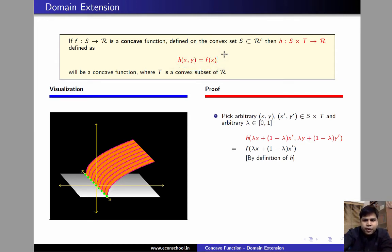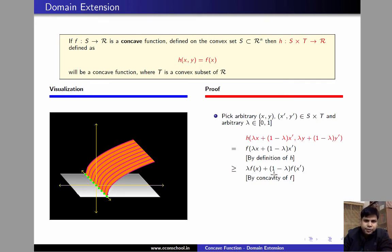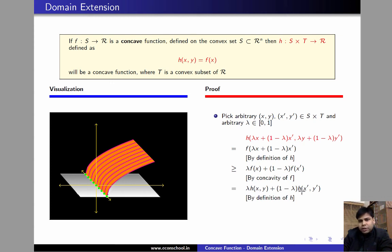We now apply the concavity of f to get the inequality: f(λx + (1−λ)x') ≥ λf(x) + (1−λ)f(x'). Again, using the definition of h — that h(x, y) = f(x) — we replace f(x) by h(x, y) and f(x') by h(x', y'). Therefore, h(λx + (1−λ)x', λy + (1−λ)y') ≥ λh(x, y) + (1−λ)h(x', y'). Therefore, h is a concave function.